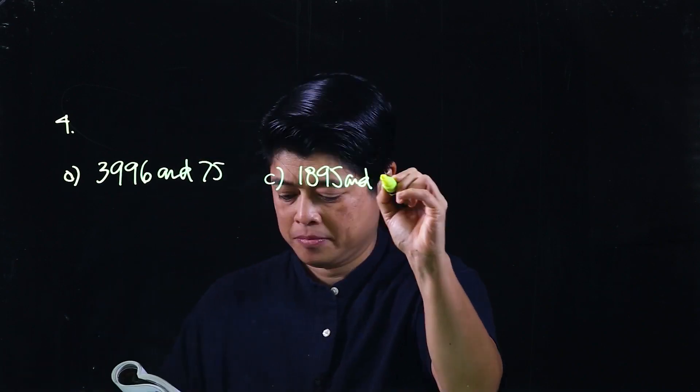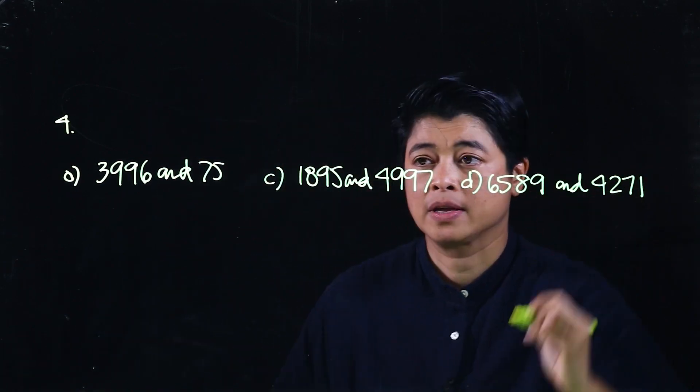We begin with page 53. We must remember that if it says 'find the difference,' the bigger number goes on top minus the smaller number on the bottom. But if it says 'subtract A from B,' then B comes before A. In the problem selected, the instruction says 'find the difference,' so we just need to make sure the bigger number is on top.